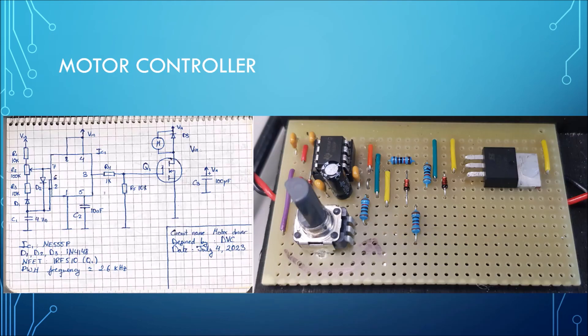To rotate the gyroscope I built this motor controller based on a 555 timer. You can find all the pictures and sketches in my GitHub folder in the video description below.